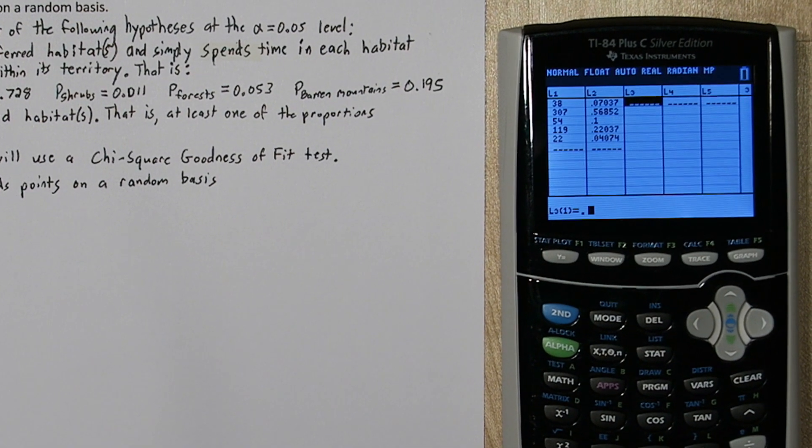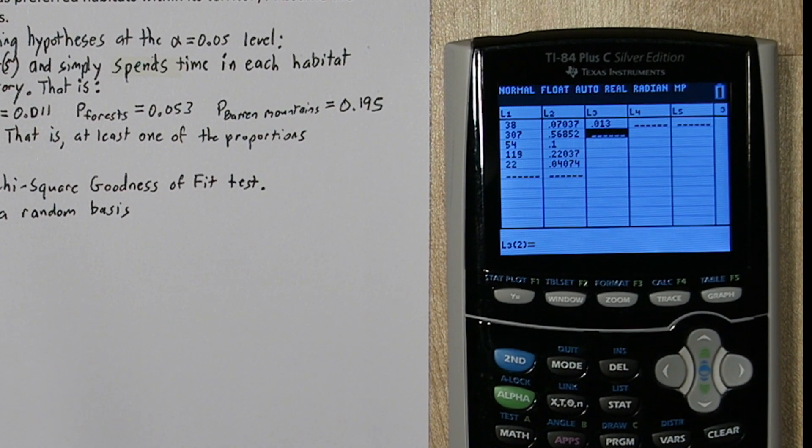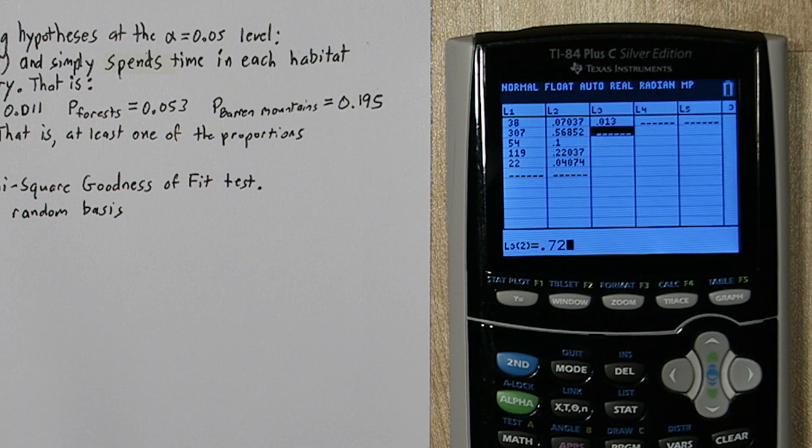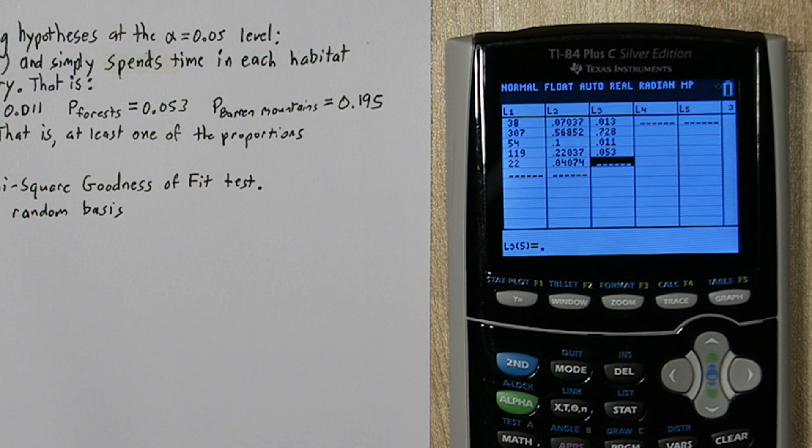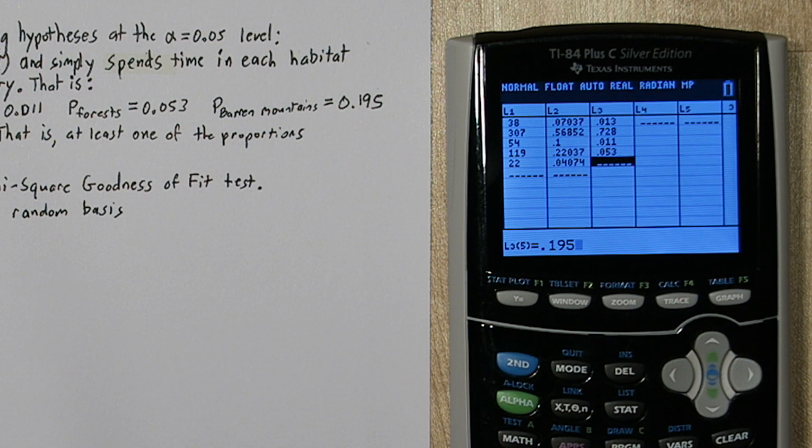So we're going to go to list three and type in the proportions of time we expected to observe it for each habitat. So for valleys, it was 1.3%, 72.8% for mountains, 1.1% for shrubs, 5.3% for forests, and 19.5% for the barren mountaintops.